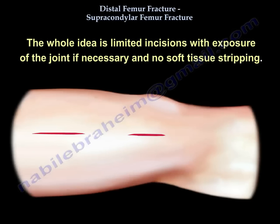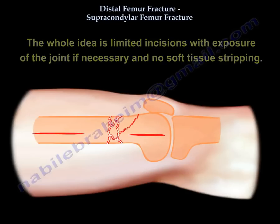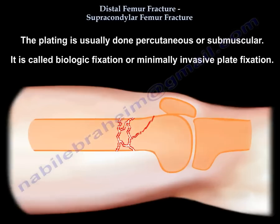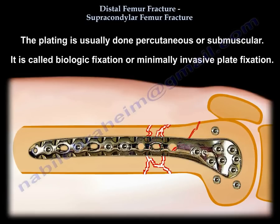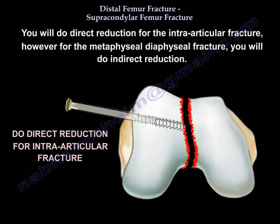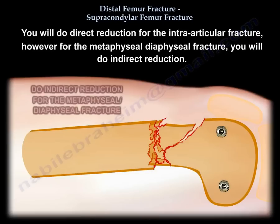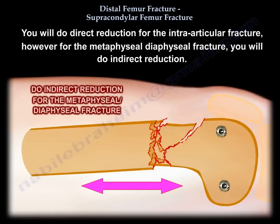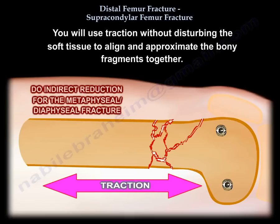The whole idea is limited incisions with exposure of the joint if necessary and no soft tissue stripping. The plating is usually done percutaneous or submuscular — this is called biologic fixation or minimally invasive plate fixation. You will do direct reduction for the intra-articular fracture; however, for the metaphyseal-diaphyseal fracture, which is usually comminuted, you will do indirect reduction.